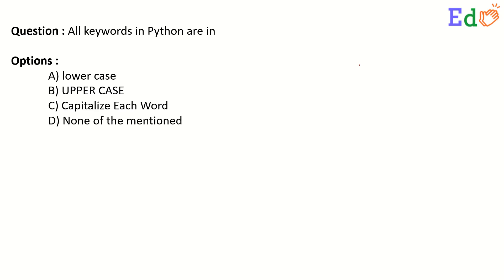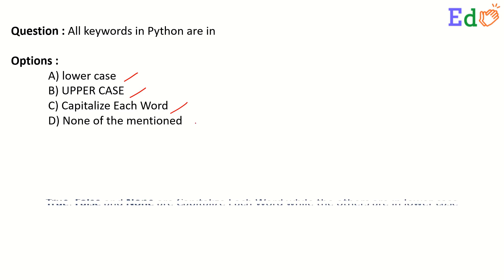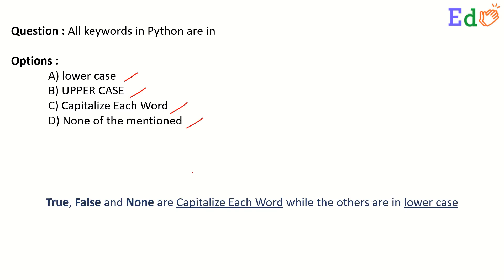All keywords in Python are in option A lowercase, option B uppercase, option C capitalize each word, or option D none of the mentioned. If we look at this, the keywords True, False, and None are capitalized each word, while others are in lowercase.